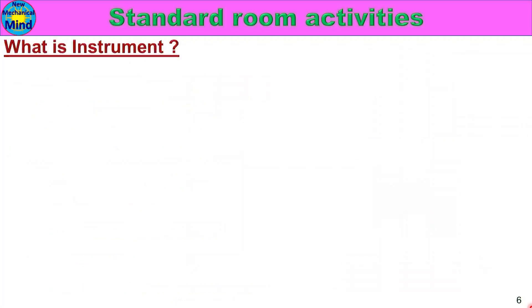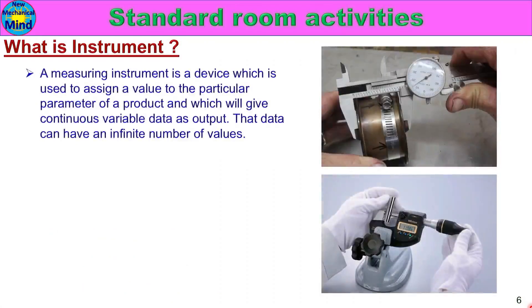What is Instrument? A measuring instrument is a device which is used to assign a value to a particular parameter of your product, and which will give continuous variable data as output. That data can have an infinite number of values.